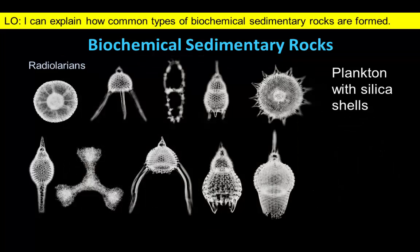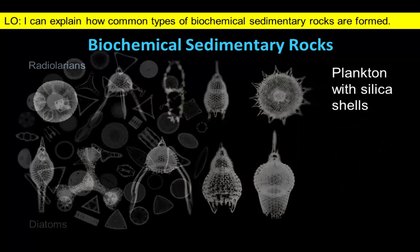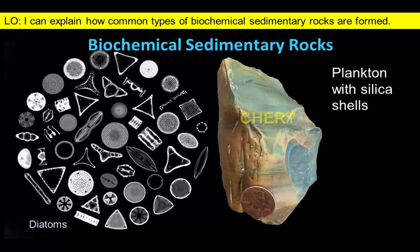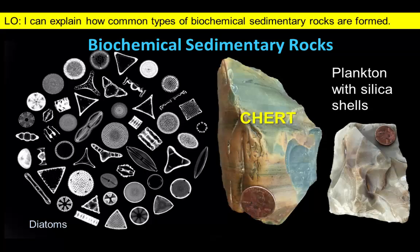Some marine organisms precipitate silica rather than calcite, and their deposits will eventually be converted to the sedimentary rock chert.